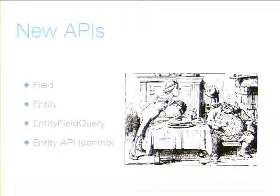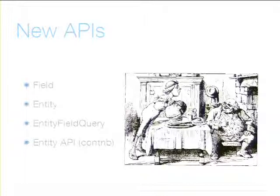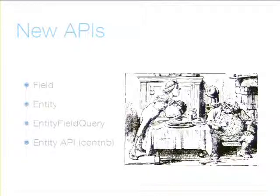We got a whole bunch of new APIs. We knew all along we were going to have a Field API — that was the whole point. We also picked up an Entity API, which was new and not initially planned. For those who aren't developers: if you want to drive a shiny new car, you've got to have keys — an API is just the keys that let people use these things.